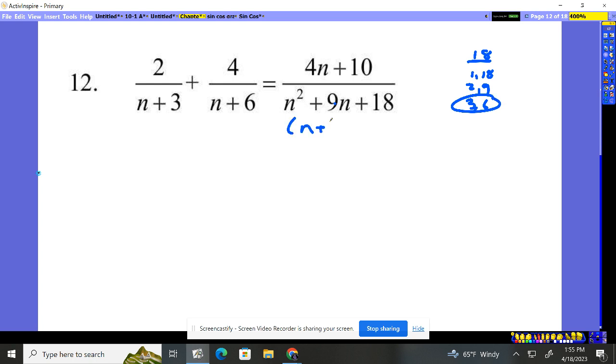So this guy's an n plus 3, an n plus 6 is what he is. Well, this is an n plus 3 here. This is an n plus 6 here. So our common denominator is going to be an n plus 3 times an n plus 6.